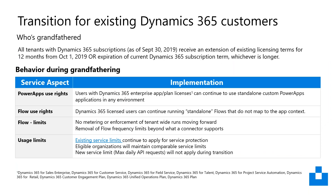For the transition of existing Dynamics 365 customers, all tenants with Dynamics 365 subscriptions as of the 30th of September receive an extension of licensing terms for 12 months from the 1st of October, or expiration of the current Dynamics 365 subscription, whichever is longer. For Power Apps use rights, users of Dynamics 365 enterprise and App Plan licenses continue to use standalone custom Power Apps applications in any environment. Flow use rights also remain the same, allowing standalone flows outside the app context. For flow limits, there's no metering or enforcement of tenant-wide runs moving forward, and the new daily API requests will not apply during the transition.